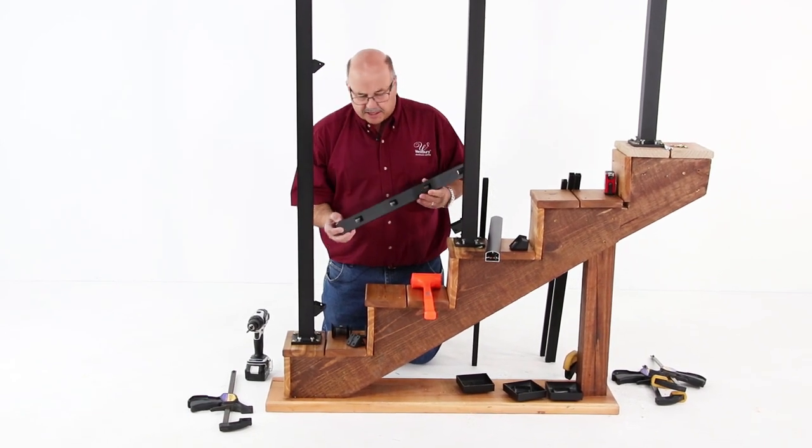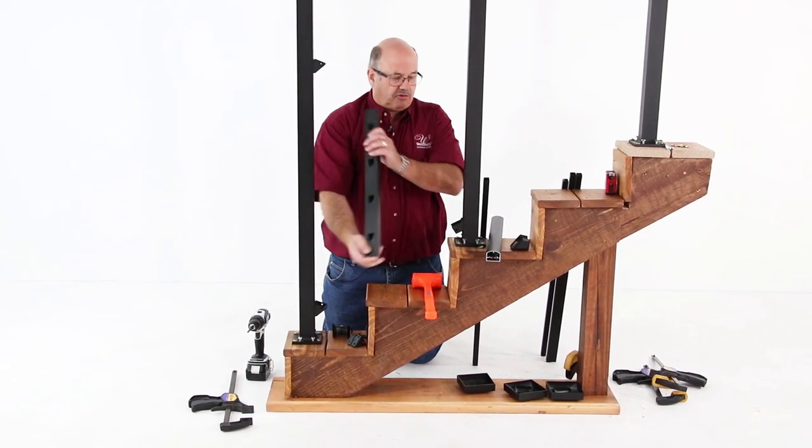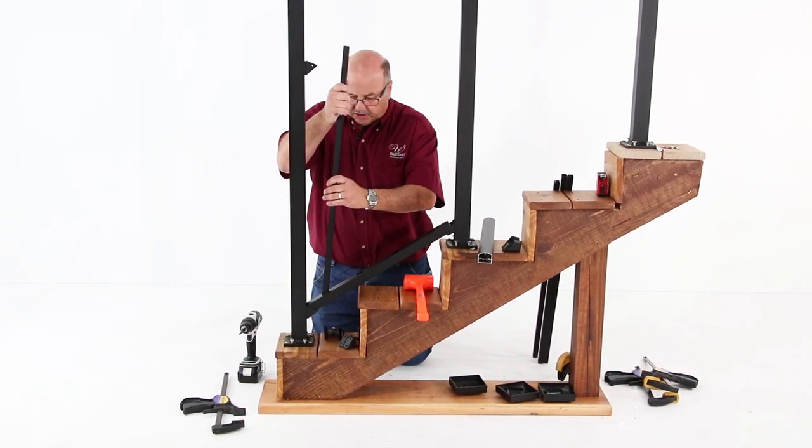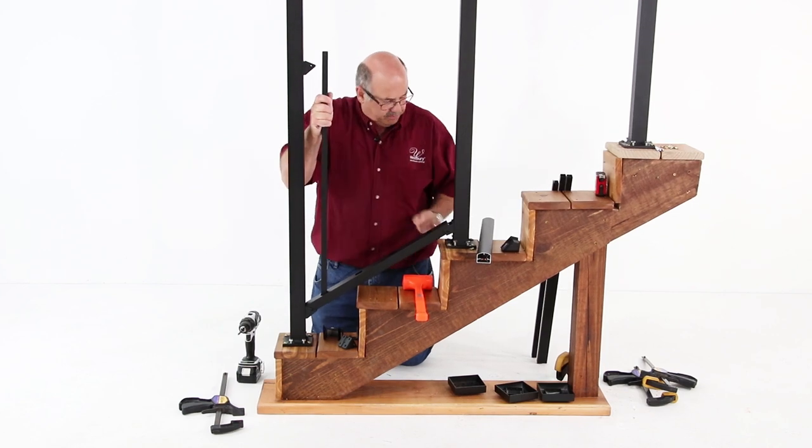So I have a little B on the bottom of the bottom rail so I don't get this turned the wrong way, because that is important. So we're going to put that into place and drop the balusters into position.